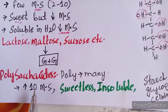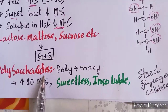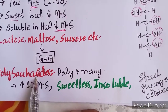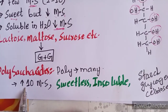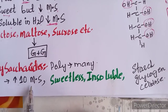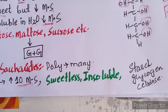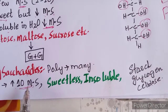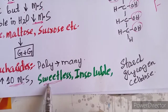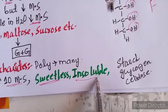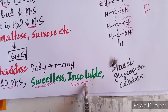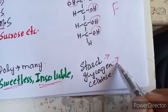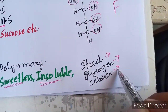The third group is polysaccharides. Poly means 'many.' The definition of polysaccharides is: those carbohydrates which consist of more than 10 monosaccharides. Examples include starch, glycogen, and cellulose.